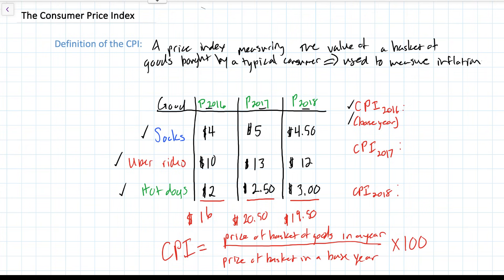So we can actually go ahead and calculate the CPIs for each of these years now. We know that the base year is 2016. So the CPI for the base year is super easy to calculate. It's $16 divided by the price of the same basket of goods in 2016, which is $16, times 100. So we get 16 divided by 16 is 1 times 100. The CPI for the base year is clearly 100.